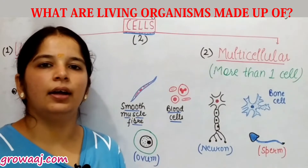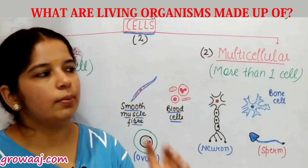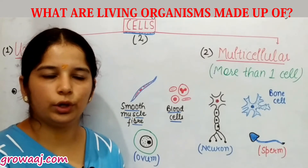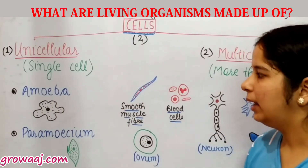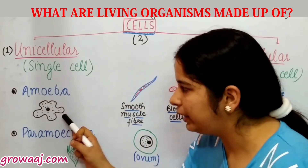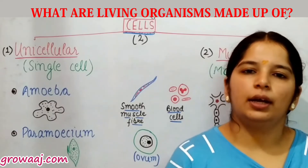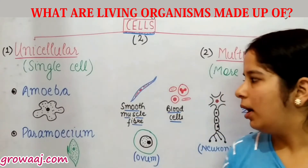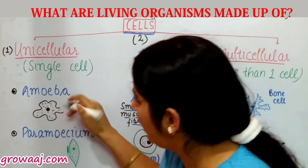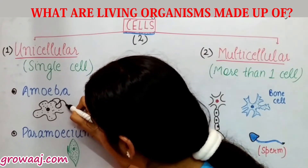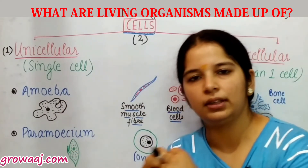Hence, every cell is regulating the body and performing functions — that is why cells are known as the basic structural and functional unit of life. Some cells have a fixed shape and some can be irregular. For example, amoeba changes its shape and has finger-like projections called pseudopodia, which it uses to engulf food and catch it. These pseudopodia can also join together. So amoeba uses pseudopodia to capture food toward itself.